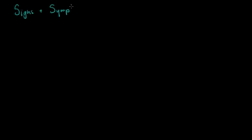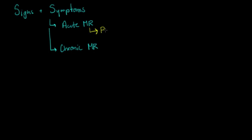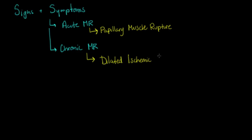Now let's talk about signs and symptoms of mitral regurgitation. You can have acute mitral regurgitation or chronic mitral regurgitation. An important cause of acute MR — where the heart has no time to compensate — would be papillary muscle rupture, which can occur after a heart attack. If this happens acutely, the heart has no time to adapt to the pressure changes, so you get flash pulmonary edema or acute pulmonary edema, the person may go into congestive heart failure, and this is a medical emergency requiring immediate treatment.